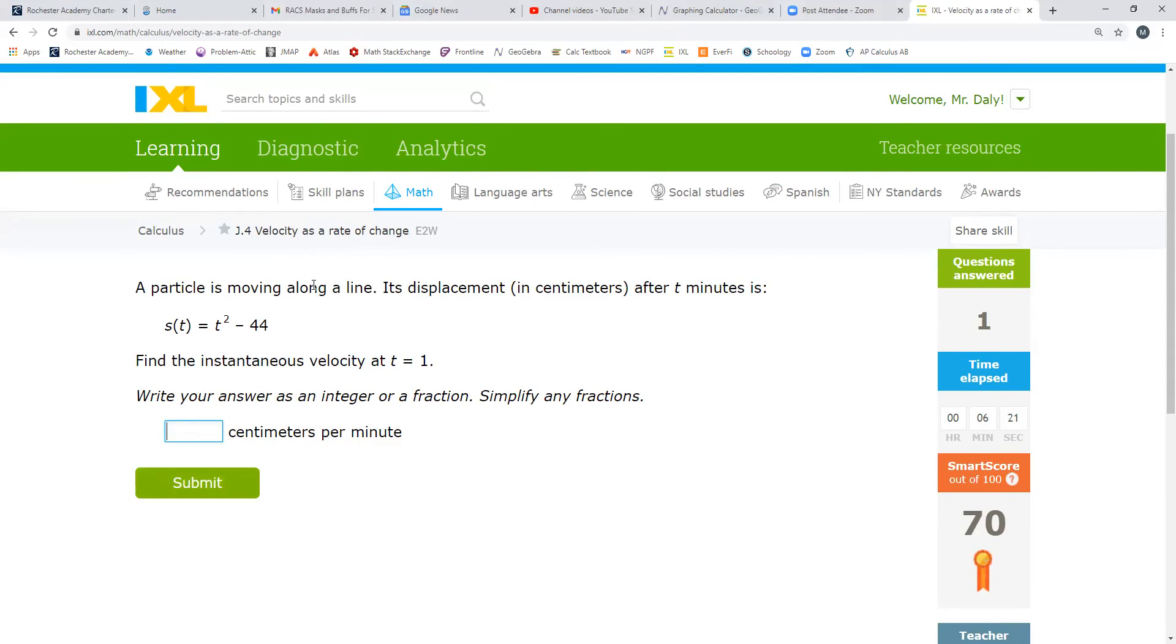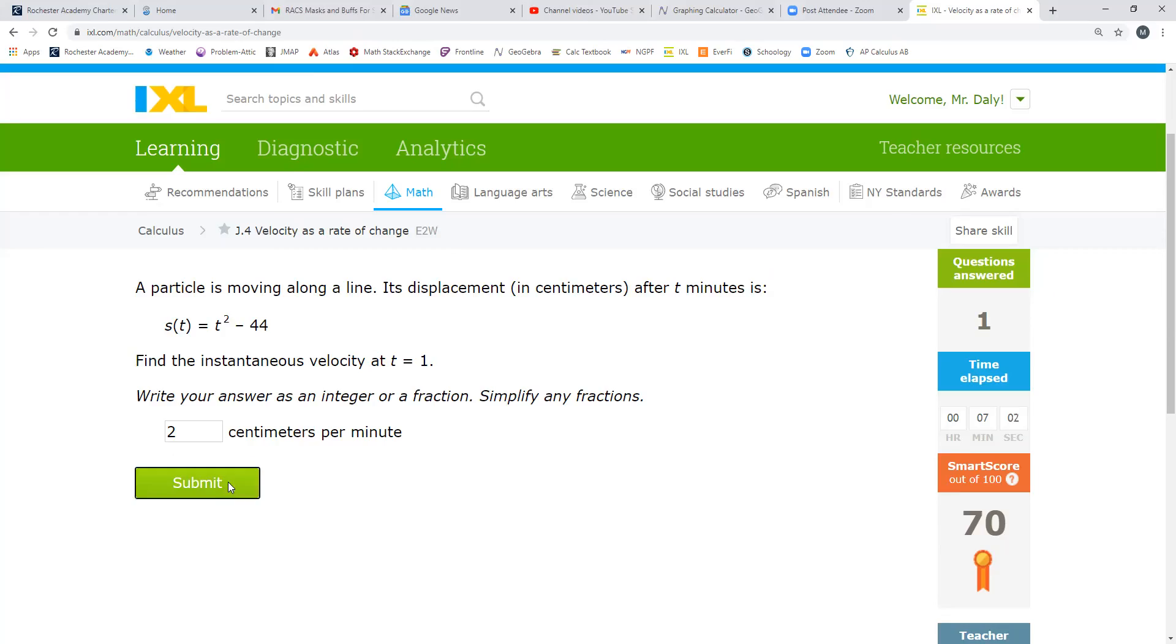Once again, we can do this quickly. Particles moving along the line. Its displacement in centimeters after t minutes is t squared minus 44. Once again, to find the instantaneous velocity, the derivative of this function is 2t. This constant thing is going to go away. And so the velocity at t equals 1 is going to be just 2 centimeters. The displacement is measured in centimeters and the time is measured in minutes. So the velocity is going to be measured in centimeters per minute. And since 2t is the velocity, substituting 1 in for that, we get 2 centimeters per minute as the instantaneous rate of change, okay?